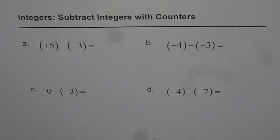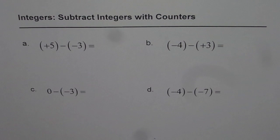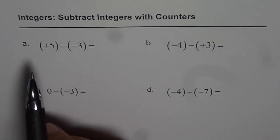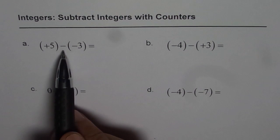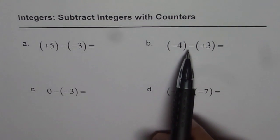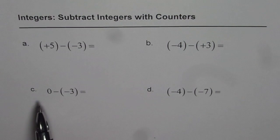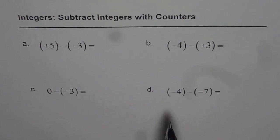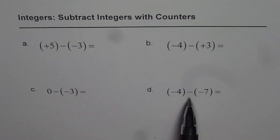Integers. Subtract integers with counters. I am Anil Kumar and in this video I will explain to you how to use counters to subtract integers. We have four different questions here. I would like you to pause the video, copy them and then solve as I explain. Part A is plus 5 minus minus 3. B is minus 4 minus plus 3. C is 0 minus minus 3. And D is minus 4 minus minus 7.